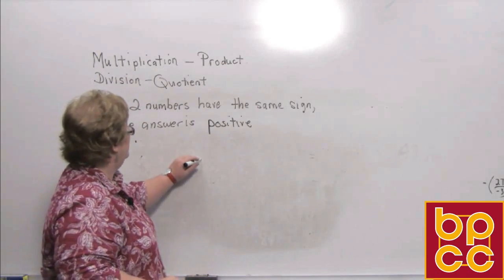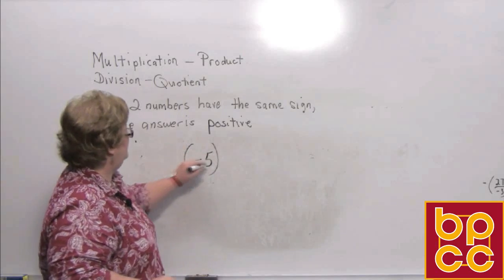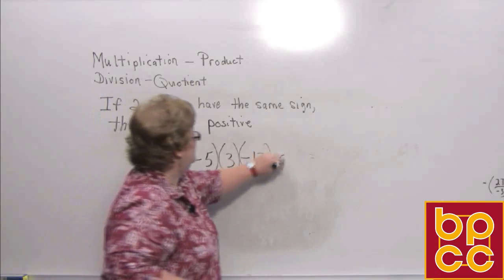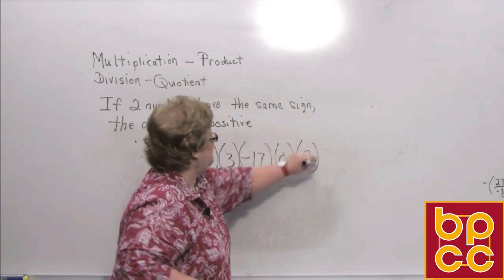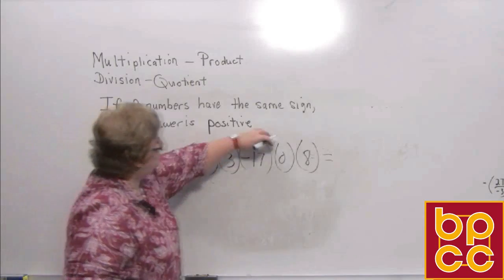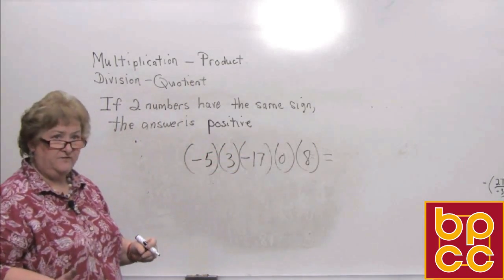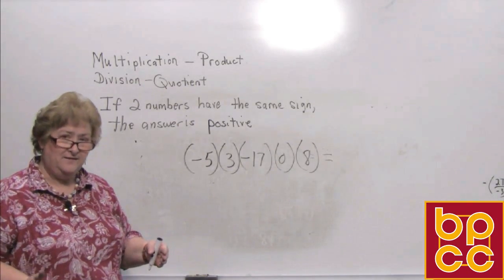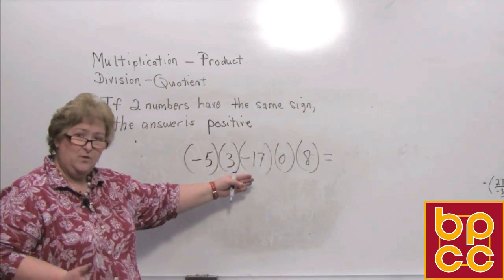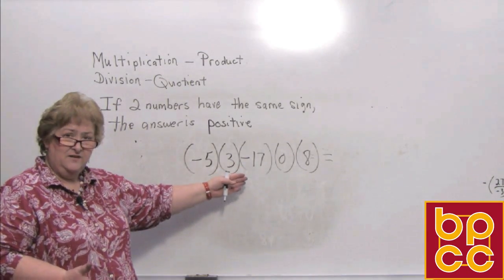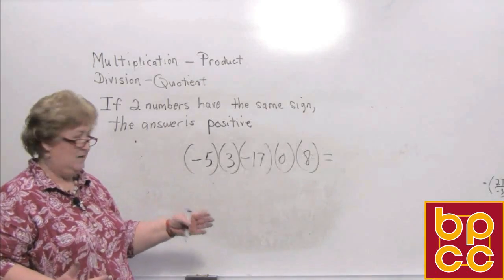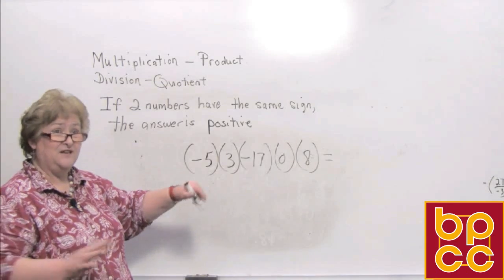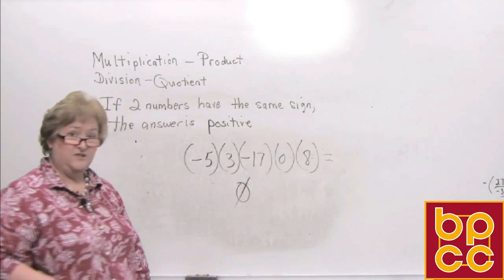I'm going to see if I can fool you on this one. Let's try: negative 5, a positive 3, a negative 17, a 0, and an 8. Should we start multiplying, or decide the sign of the answer? You don't have to do any of that — because if you have a 0 anywhere in the problem, the answer is 0. I'm not about to start multiplying all this. I'm going to step back, look at the whole problem, and when I see that 0, I'm going to say: the answer is 0.